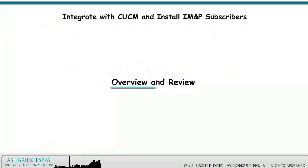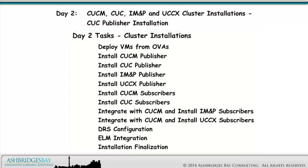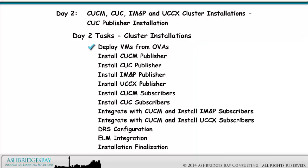Let's start with a quick overview and review. Here are the tasks for our Cisco Collaboration Cluster Installation and Integration. On Installation Day, we install our CUCM, CUC, IM&P, and UCCX clusters. We deploy all of the VMs from OVAs, attach the installation media, and install our CUCM, CUC, IM&P, and UCCX publishers.